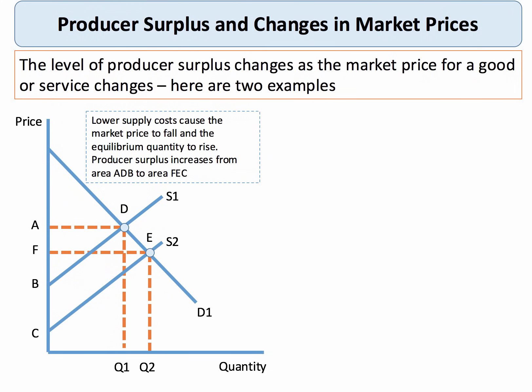Let's shift some curves around and see what happens to producer surplus. As the market price for a good or service changes, so too will producer surplus. In our first example we see an outward shift of the supply curve, caused by a fall in the price of component parts or perhaps wages. Lower supply costs cause the market price to fall and the equilibrium quantity to expand from Q1 to Q2. The original price was A and the producer sold Q1. After the increase in supply, the price is F and the producer is selling Q2. Producer surplus increases from area ADB initially to a bigger area, FEC. Lower supply costs increase producer surplus.